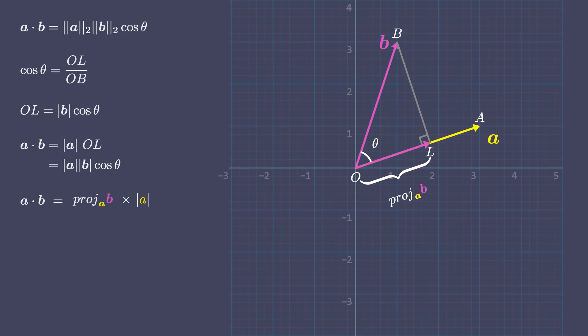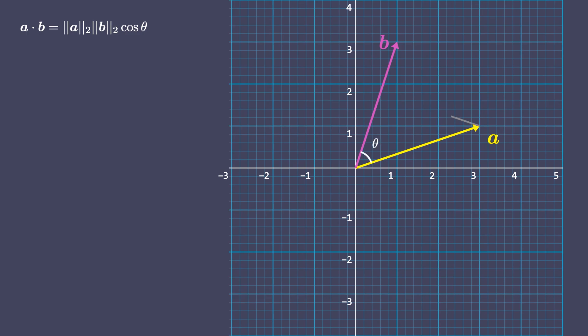One important property of dot products is that it is commutative. Let's see if B dot A gives us the same result as A dot B did. This time we will project A onto B.